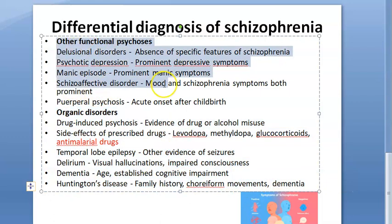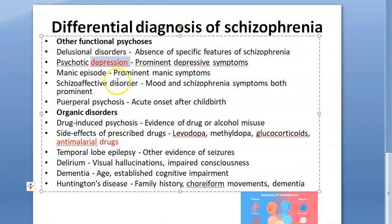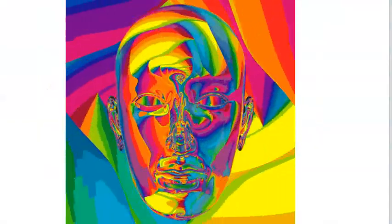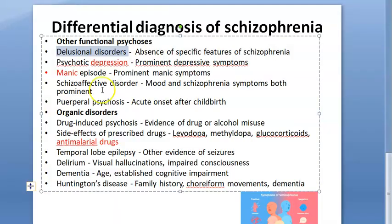There could also be other functional psychoses, meaning you cannot organically define or remove a cause. It could be that the person is having depression or a manic episode. Then there is delusional disorder, where specific features of schizophrenia such as hallucinations are absent — the patient has delusions but lacks the full schizophrenia picture.